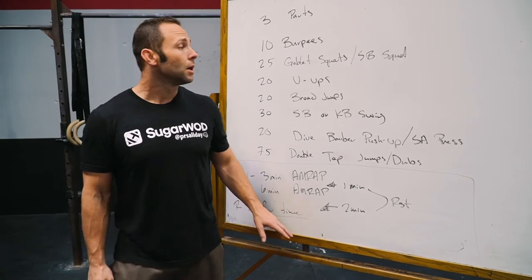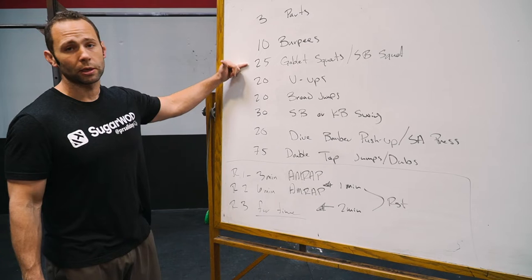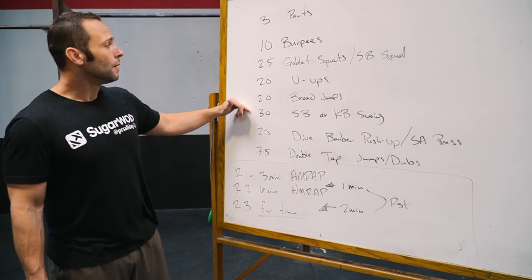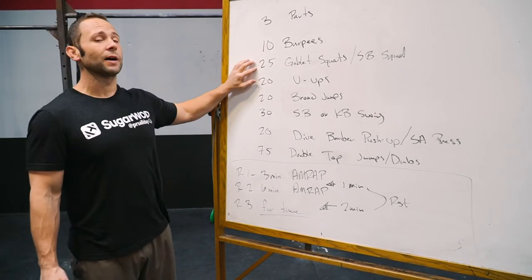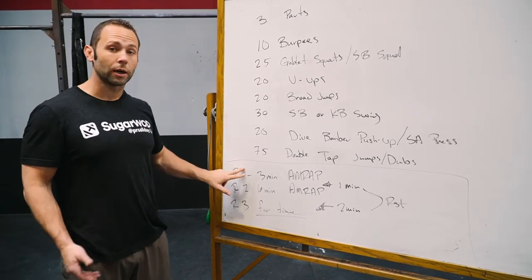And then we're going to go for time. Now, the way this workout will work is you have essentially three minutes to do as much work and get as many reps as possible. Say we get through the 25 goblet squats, three minutes is up. That's your score for round one.